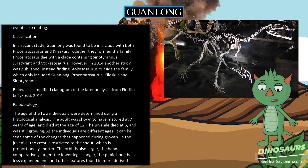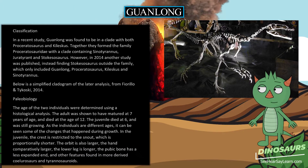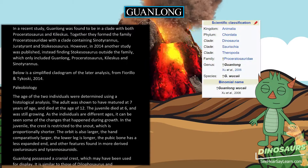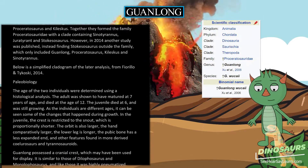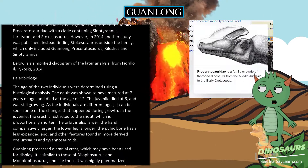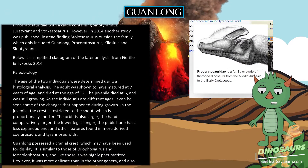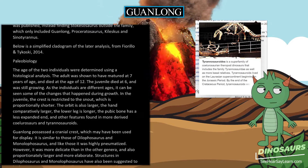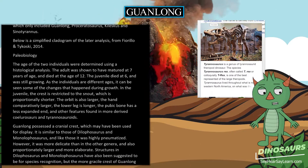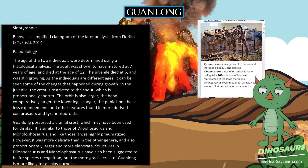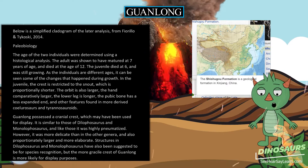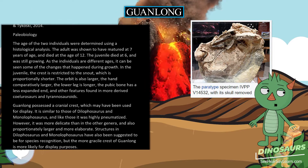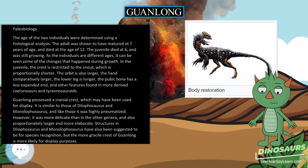The ages of the two individuals were determined using histological analysis. The adult was shown to have matured at seven years of age and died at the age of 12; the juvenile died at six and was still growing. As the individuals are different ages, growth changes can be observed: in the juvenile, the crest is restricted to the snout, which is proportionally shorter; the orbit is larger; the hand comparatively larger; the lower leg is longer; and the pubic bone has a less expanded boot — features found in more derived coelurosaurs and tyrannosauroids.